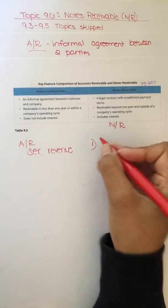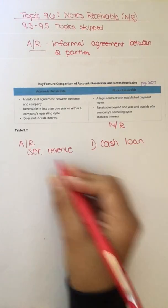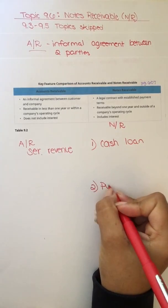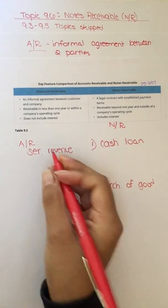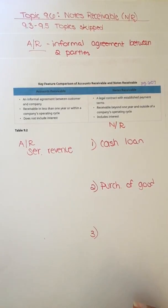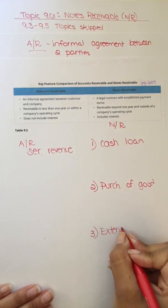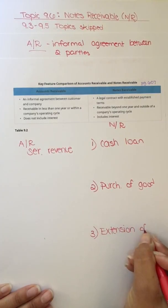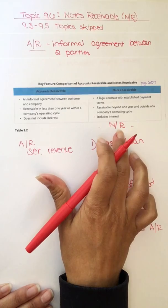The first could be cash loan. Second could be the purchase of a good, or the providing of a service. The third situation could be an extension of an existing customer account. So those are the three common situations that will lead to the company creating a note receivable.